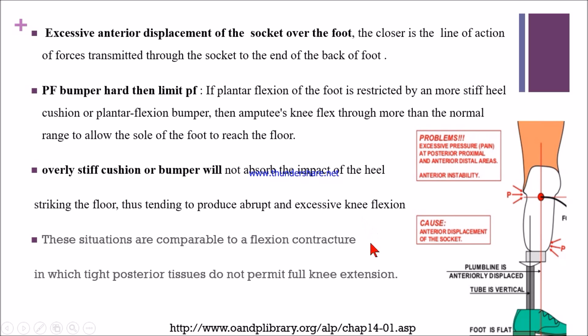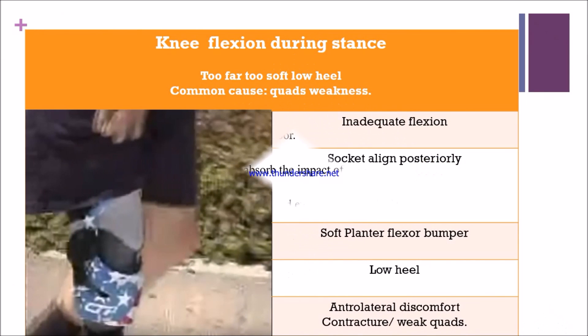If the patient has a knee flexion contracture, there will be tight posterior tissues that do not permit full knee extension, and because of that there will be excessive flexion of the knee.